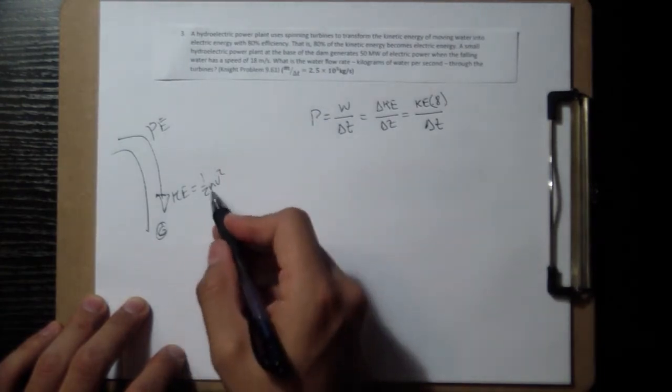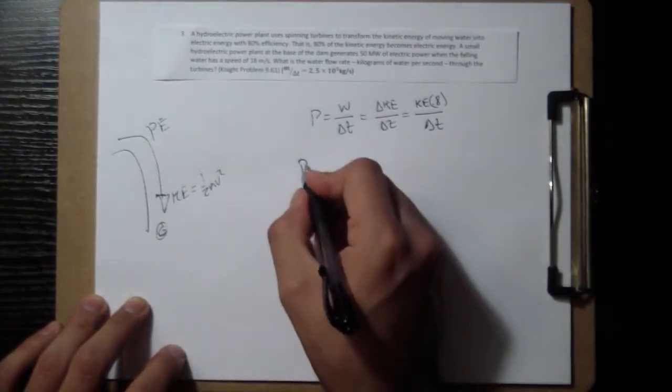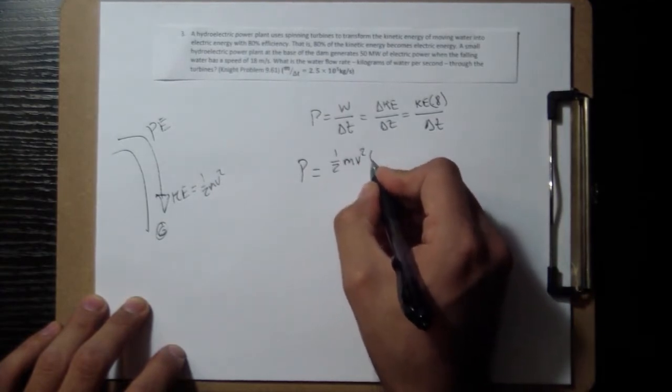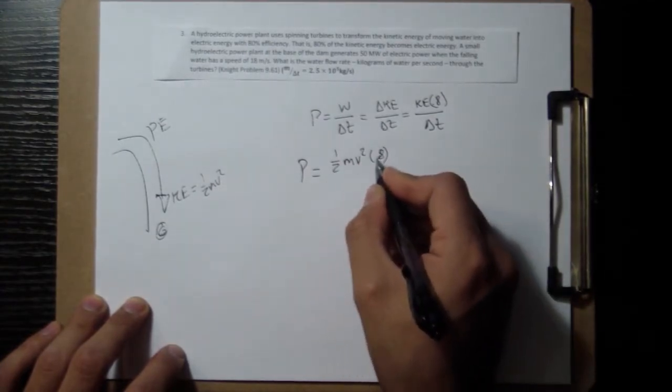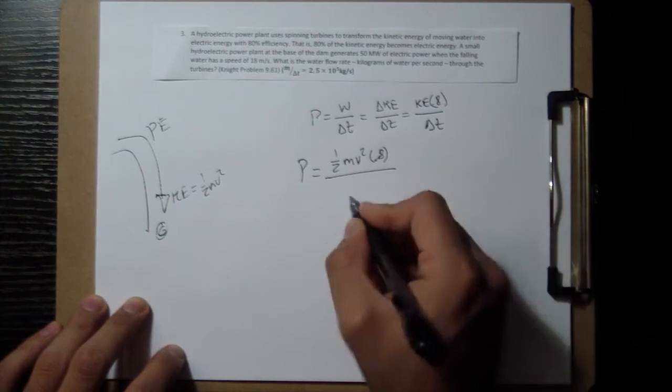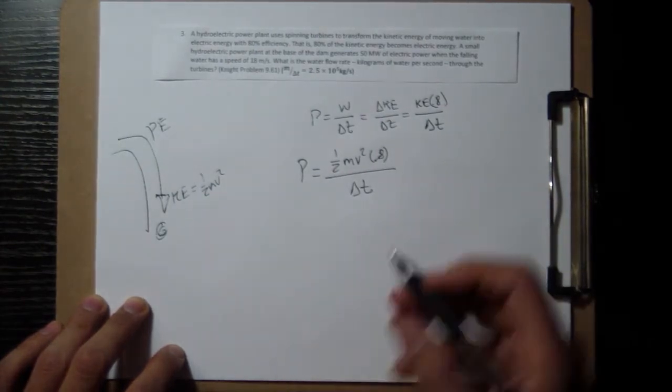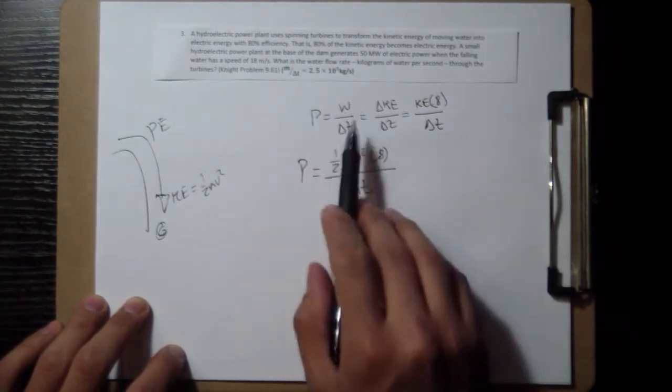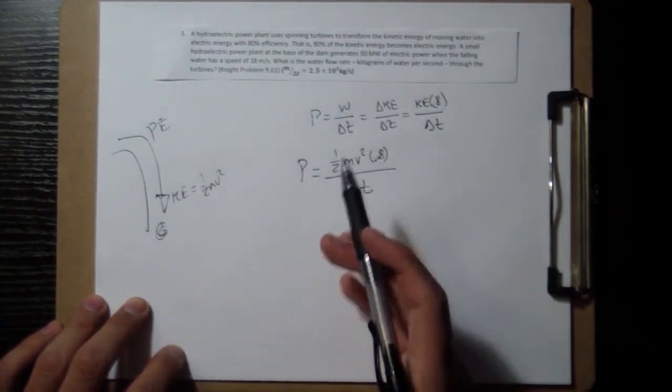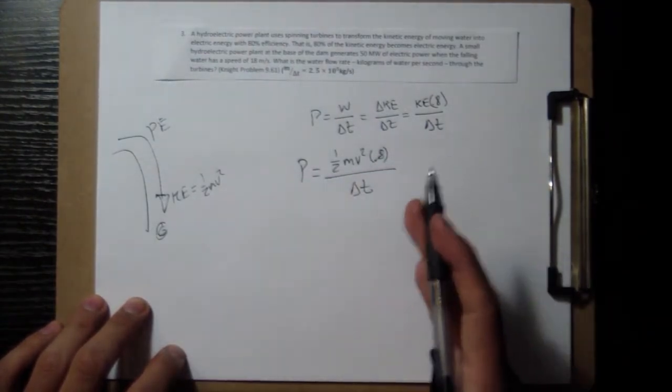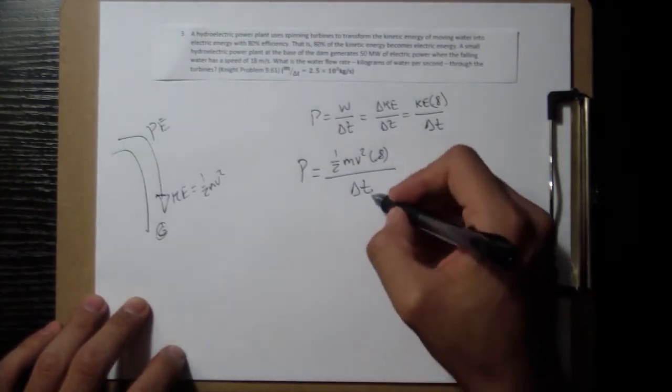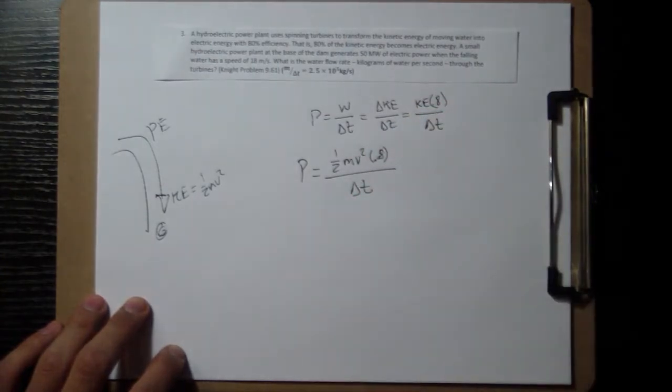this change in kinetic energy is going to be the original kinetic energy times the 0.8. Think of it like that. And if we have this kinetic energy being one half mv squared, we plug this in, one half mv squared times our 0.8 efficiency divided by change in time. Here is where that m over delta t shows up. That's what we're looking for, the water flow rate, or the mass flow rate, how much mass is passing through for a given second.